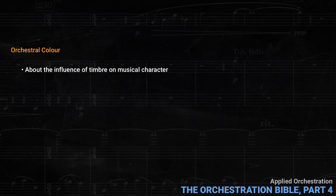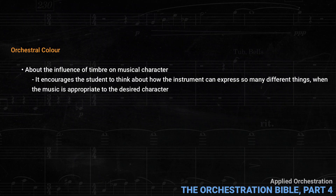For example, when talking about the flute, examples include the following characters: incisive, idyllic, luminous, magic, playful, somber, and gentle. In accessing these examples, he explains how each of these characters is created. In other words, this is not just a list of orchestral recipes like we sometimes see in film music. Rather, it encourages students to think about how the instrument can express so many different things when the music is appropriate to the desired character. The first section in this chapter touches on woodwinds, horns, and brass. Each instrument includes examples like the flute ones listed above. He includes saxophones as well.